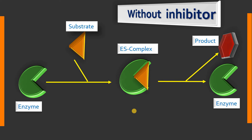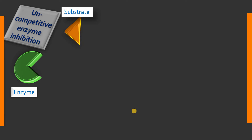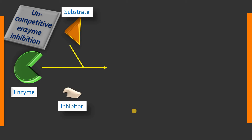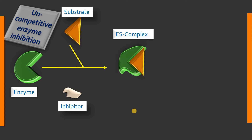We will now see the mechanism of uncompetitive enzyme inhibition. Here we have an enzyme and a natural substrate, and to this reaction we add the uncompetitive enzyme inhibitor. Even in the presence of this inhibitor, substrate combines with the enzyme and forms the enzyme-substrate complex. Please notice that after formation of the enzyme-substrate complex, there is a conformational change in the enzyme which creates a binding site for this particular inhibitor.